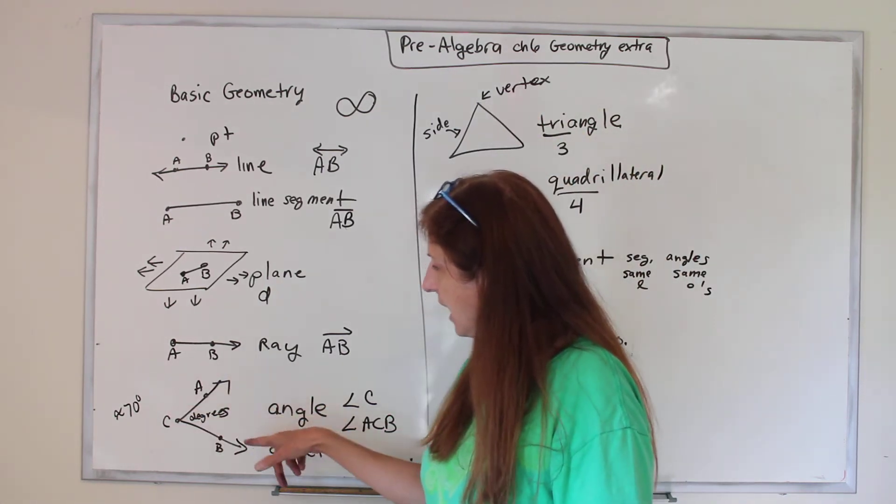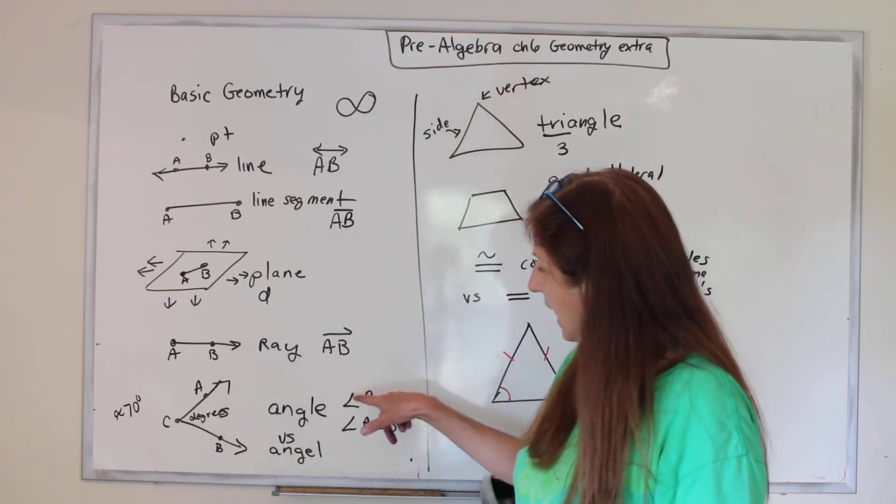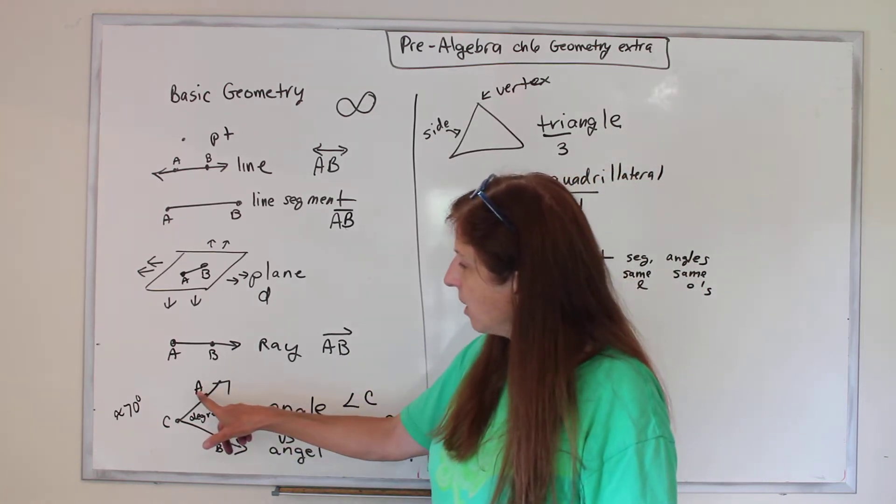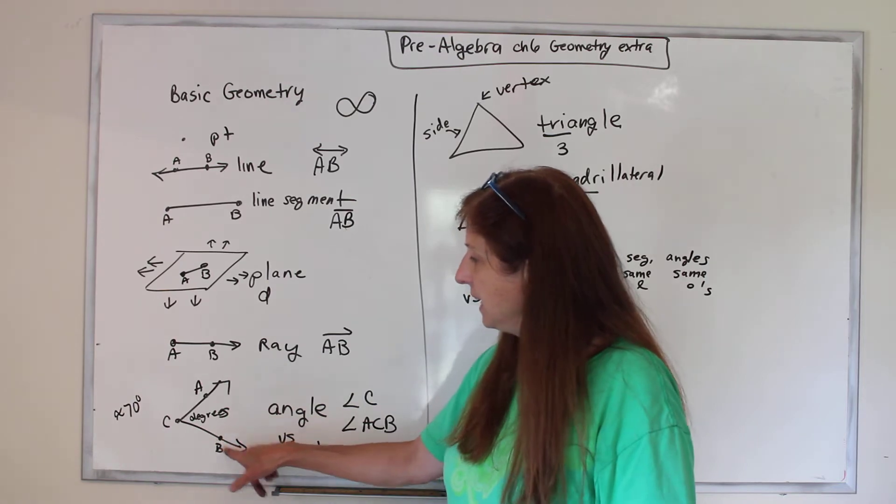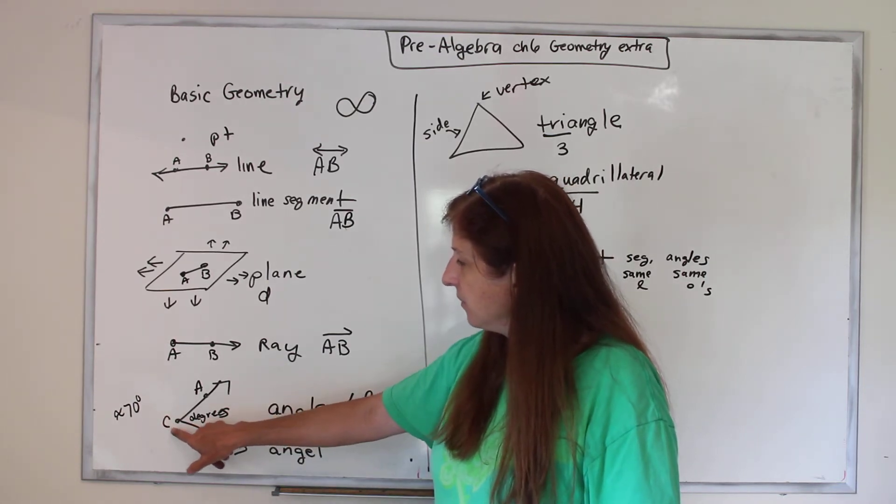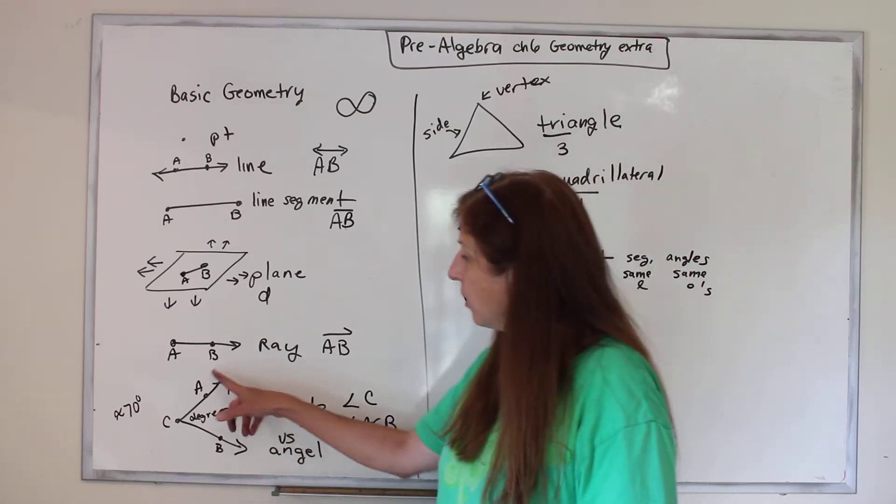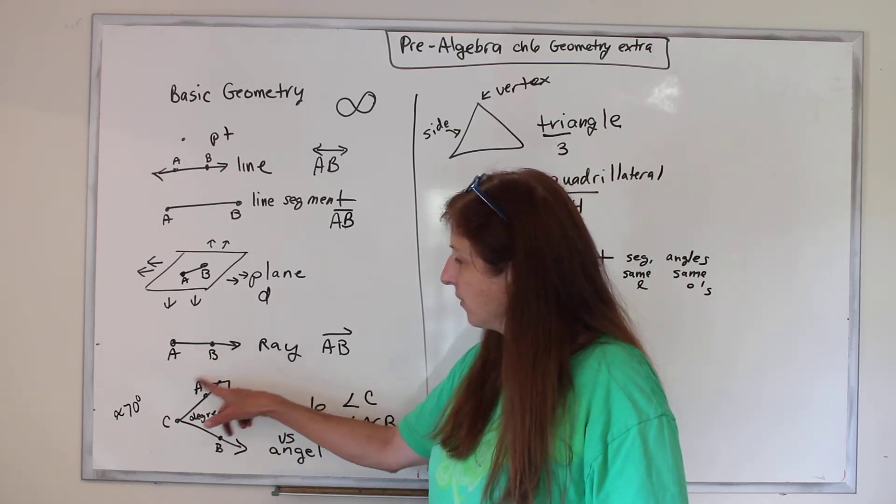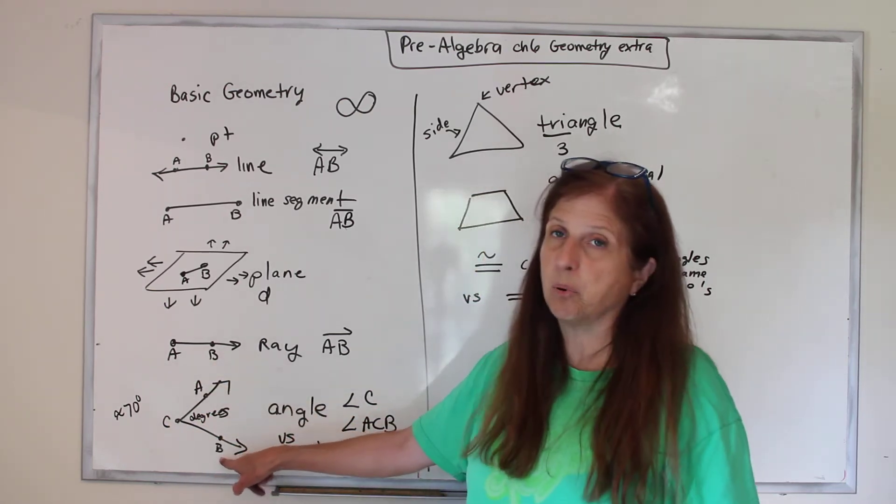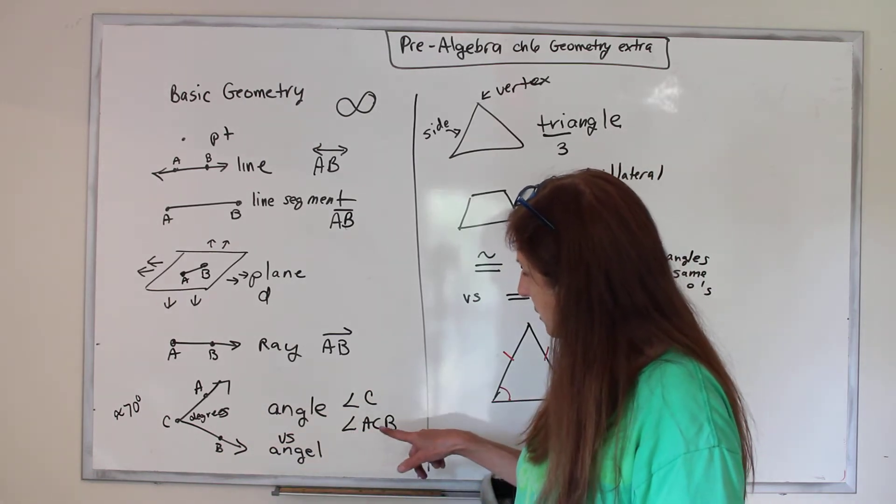So this is the angle. It can either be called angle C, or it could be called angle ACB, where you put the vertex in the middle. You don't put them in alphabetical order. You put them from a point in the line to the vertex to another point. So this could be called angle C, B, D.